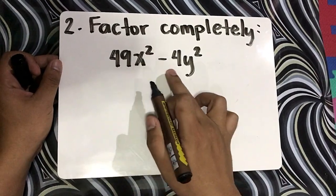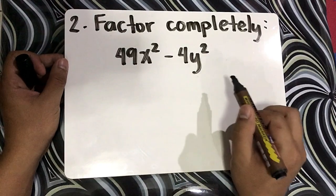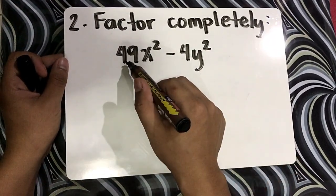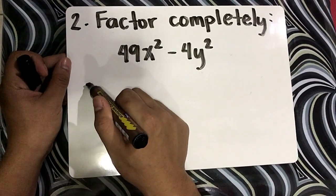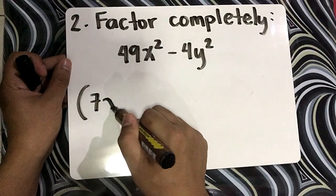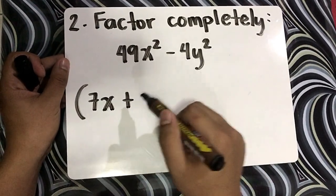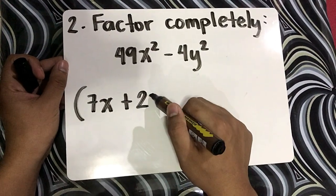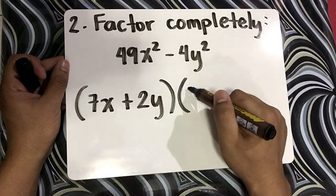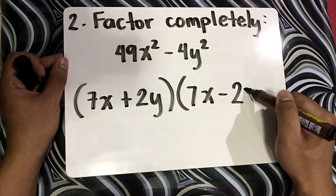49x squared minus 4y squared. Notice in our expression, this is the difference of two squares, so this is a perfect square. The factored form is: quantity 7x plus 2y, times quantity 7x minus 2y.